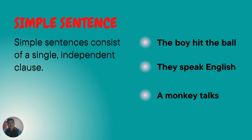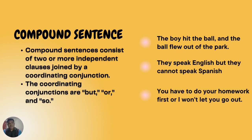In that sentence, the predicate is 'hit' as the verb and 'the ball' is the object. In the second sentence 'They speak English,' the subject is 'they,' the predicate is 'speak,' and the object is 'English.' In the third sentence, we have only a subject and predicate: the subject is 'a monkey' and the predicate is 'talks.' The key of the simple sentence is that it should at least have a subject and predicate.